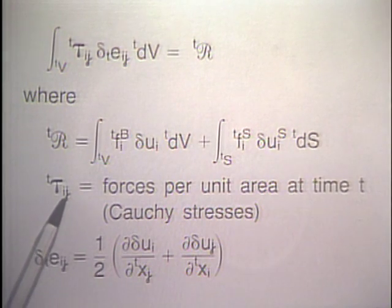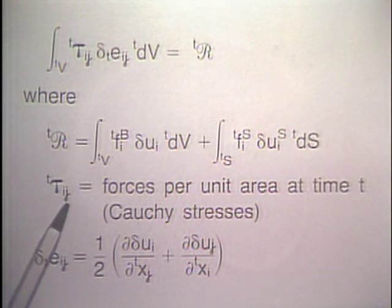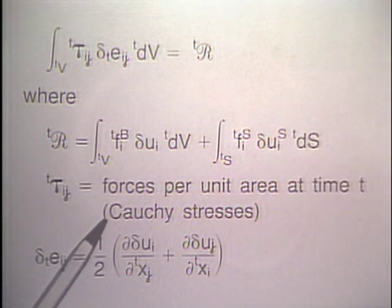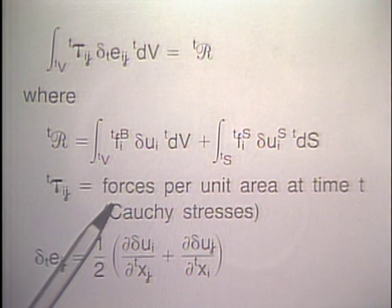These are the Cauchy stresses — forces per unit area. In infinitesimal displacement analysis, we talk about only one kind of stress: the engineering stress. In large displacement and large strain analysis, we have different stress measures. The Cauchy stress is the force per unit area at time t — an actual physical stress. Later we will introduce another important stress measure which is not quite physical. The Cauchy stress is what you would want printed out from a computer program to design your structure with.